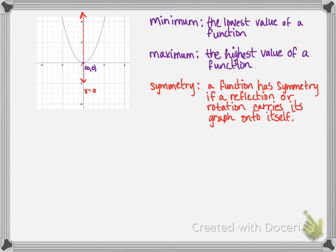If we were to fold the function on this line, it would fold onto itself. So we call this the axis of symmetry and that is x equals 0.